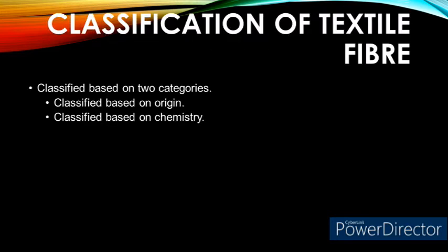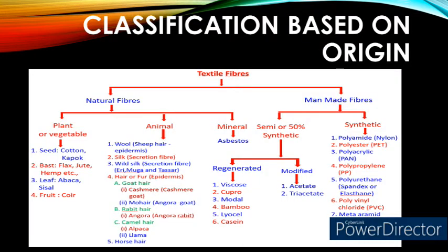Classification of textile fiber. The textile fibers can be classified based on two different categories: number one — classification based on origin; number two — classification based on chemistry. Based on origin, the textile fibers are classified into natural fibers and man-made fibers. Further, the natural fibers are classified into plant or vegetable fiber, animal fiber, and mineral fiber.